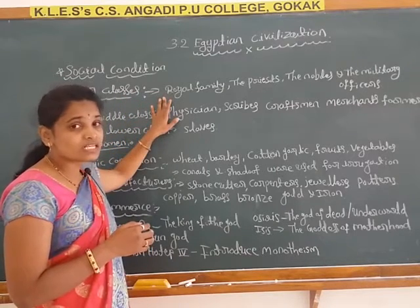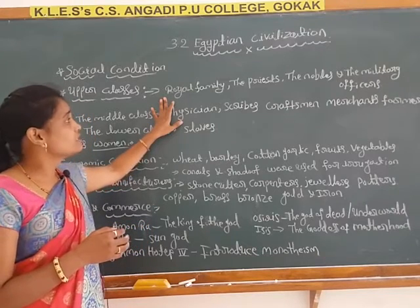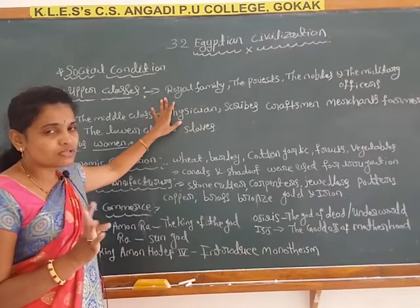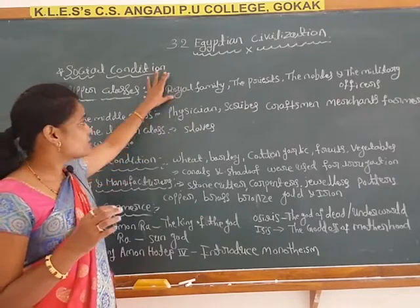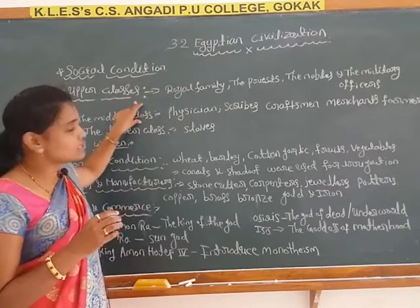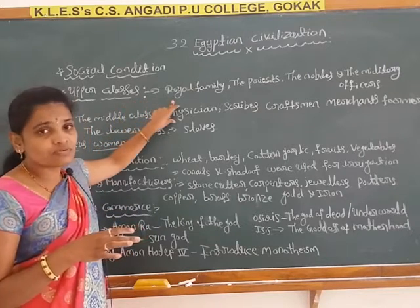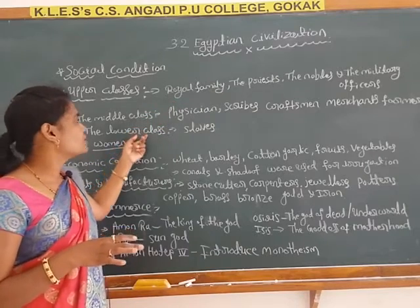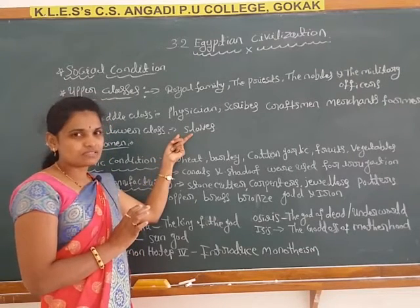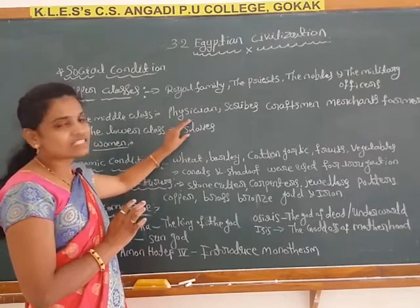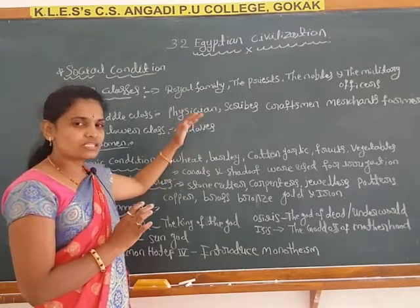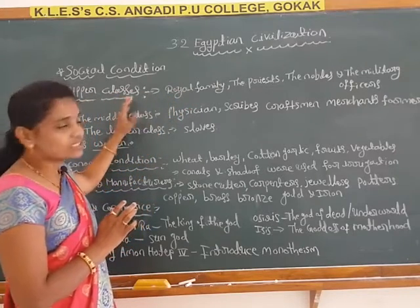The upper classes had many facilities and led comfortable and luxurious lives. The upper classes include the king and royal family, the nobility, and military officers — they faced no problems in Egyptian civilization. The middle class led common lives, working in different fields. In the lower classes, slaves faced the most problems, living in small huts and leading a hard and toiling life.